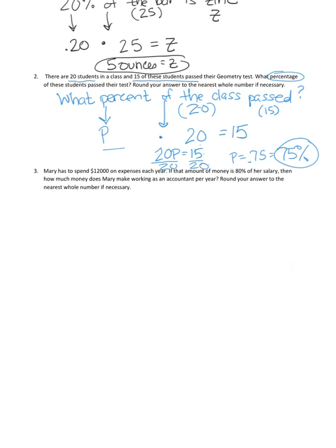So let's try the last one. Mary has to spend $12,000 on expenses each year. If the expenses she spends, that amount of money, is 80% of her salary, then how much money does Mary make working as an accountant per year? So salary is what you make per year. So what I can infer is that 80% of her salary is expenses. Her salary we don't know yet, so that's S. The expenses, though, are $12,000.